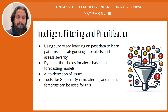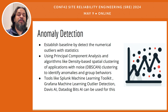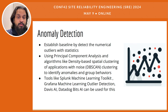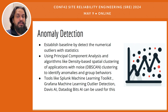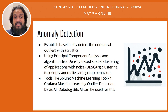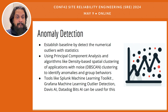An effective strategy for anomaly detection starts with establishing a baseline for normal operation metrics using statistical methods to identify numerical outliers. This involves calculating statistical parameters such as mean and median to understand typical system behavior. Once a baseline is set, any significant deviation from these metrics can be flagged as an outlier. This initial setup is crucial as it sets the stage for more sophisticated analysis and helps in quickly spotting anomalies that fall outside the expected pattern.